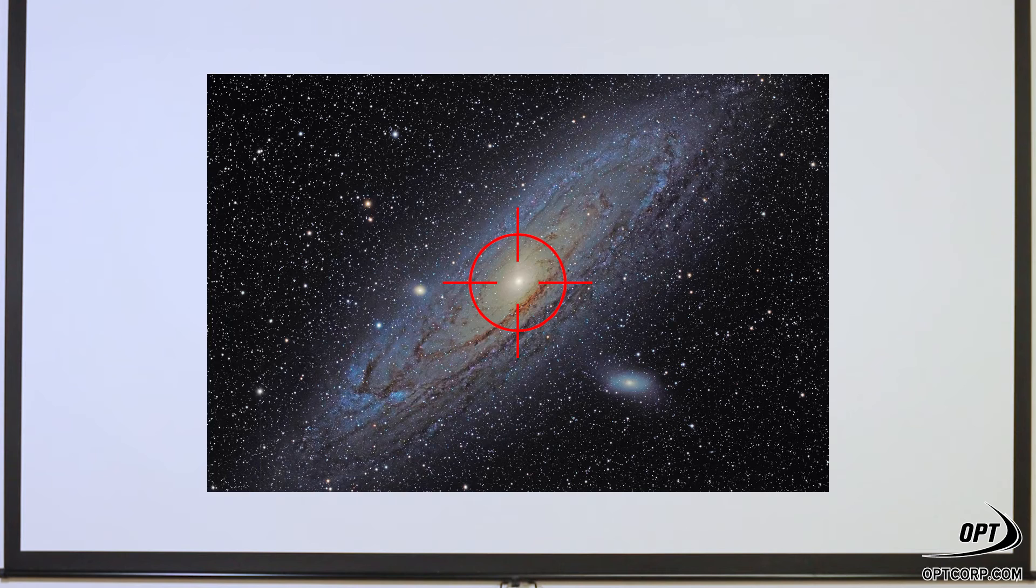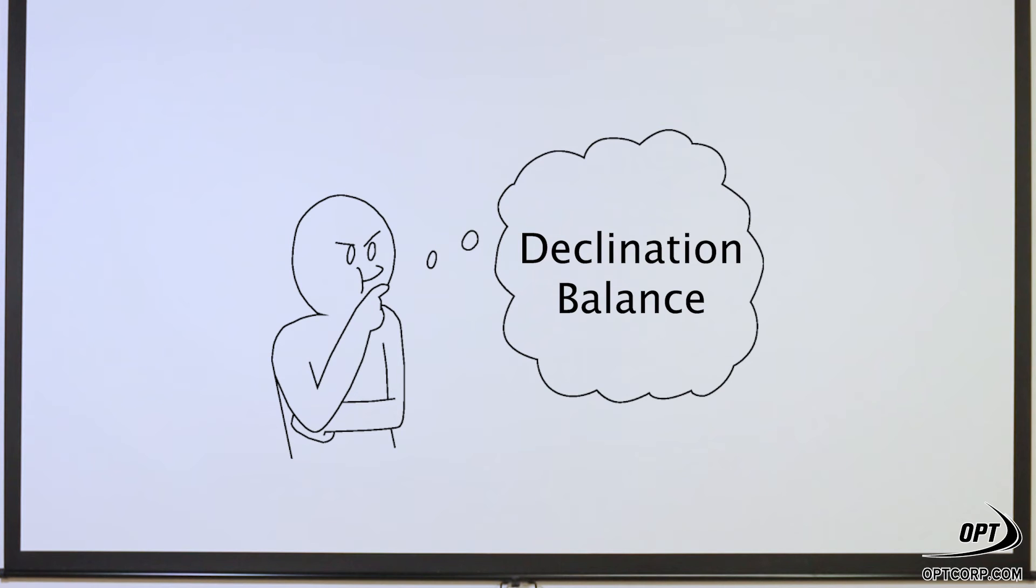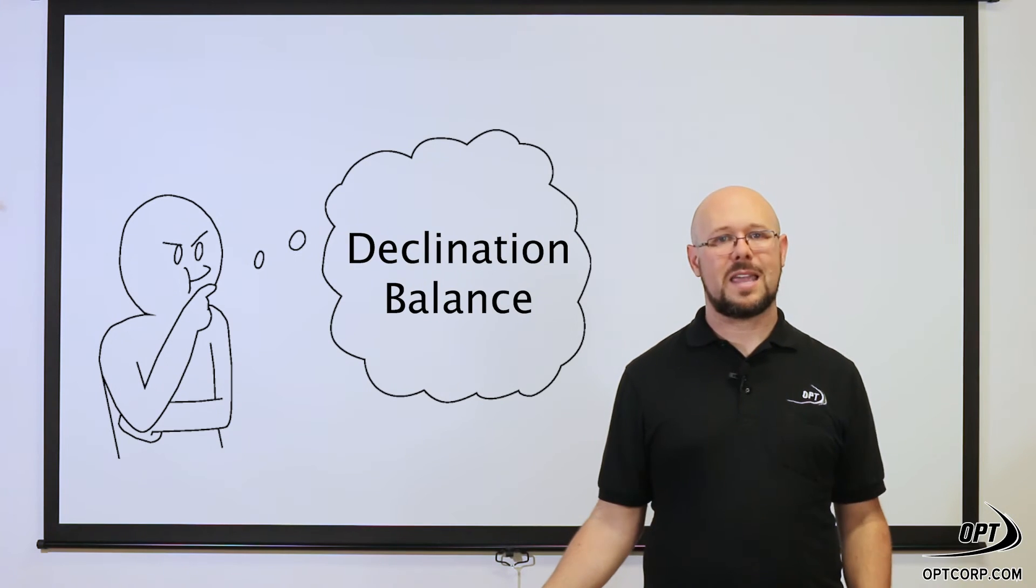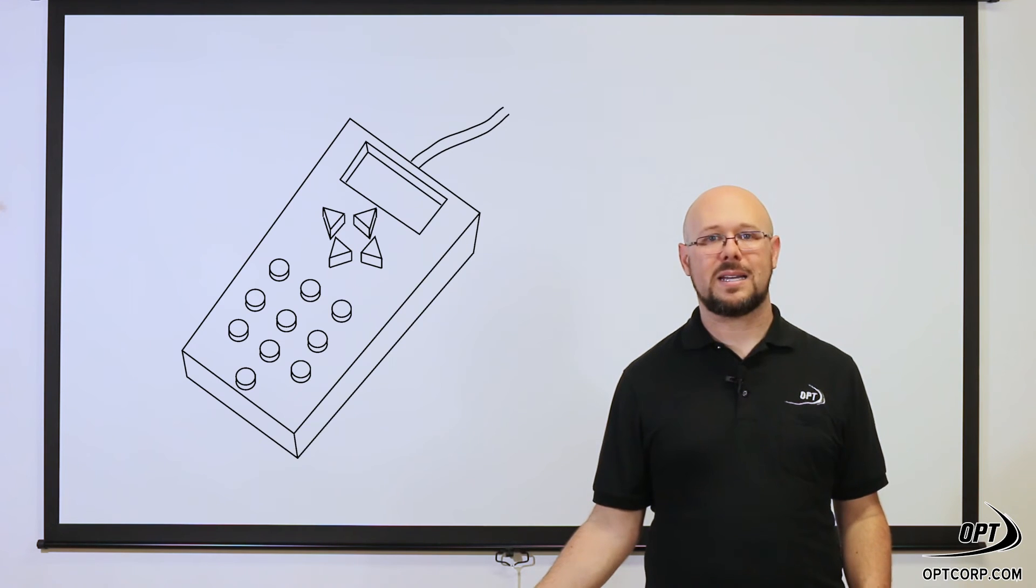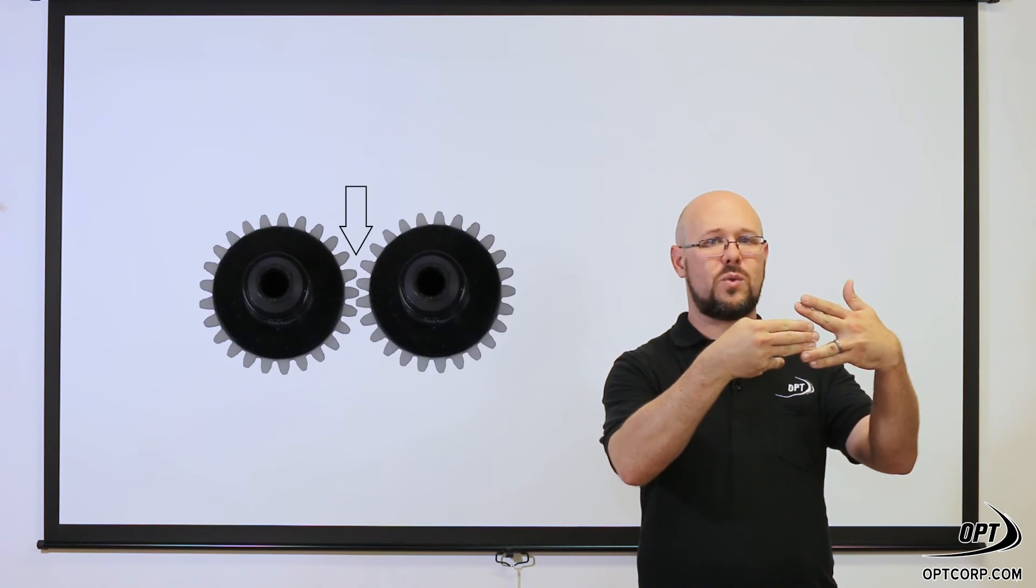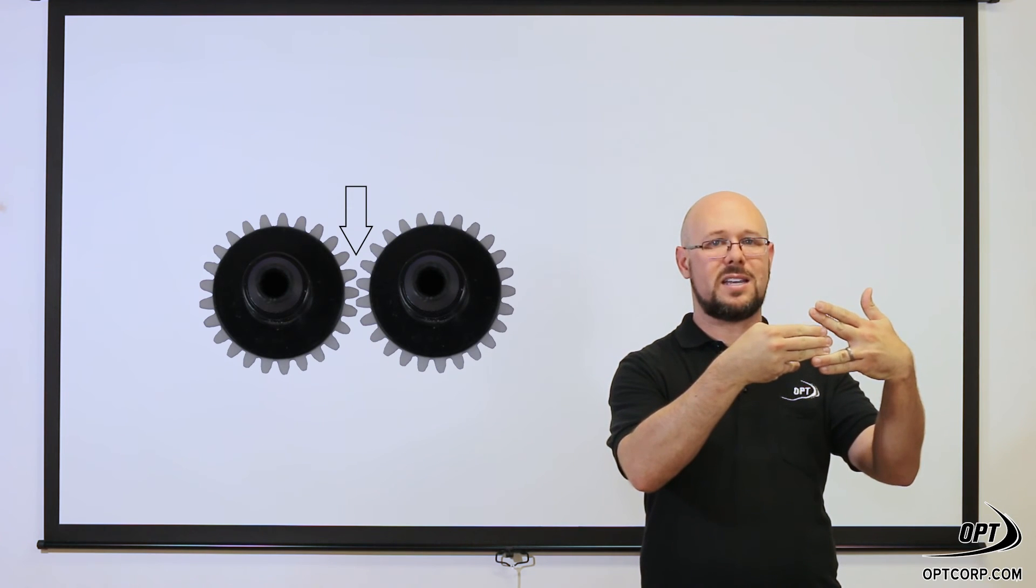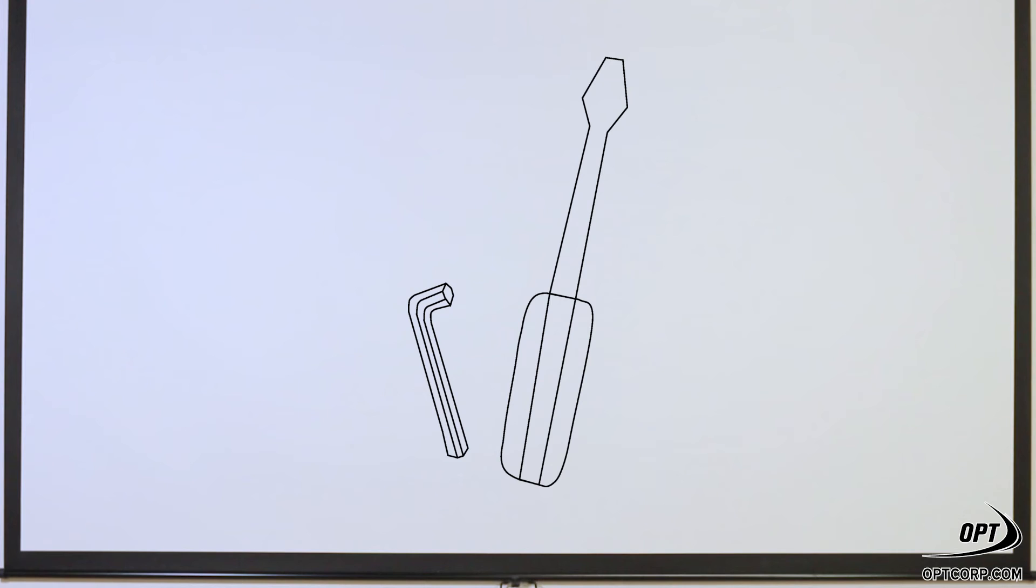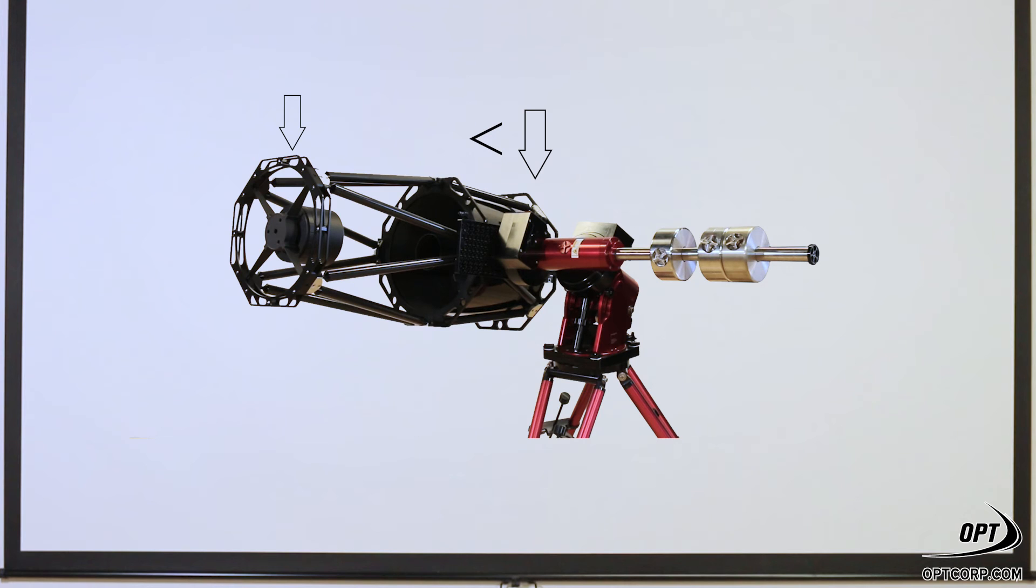If you're doing guided astrophotography, you also have to consider declination balance. You can run into the same issue where you send a guide command and the telescope essentially floats because you're between teeth on the declination gear. The way to fix that is to slightly imbalance the mount in declination as well.